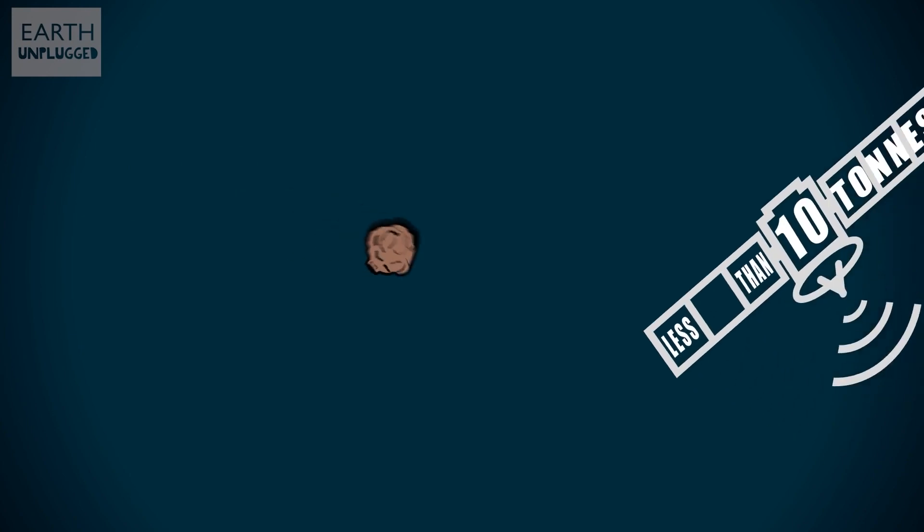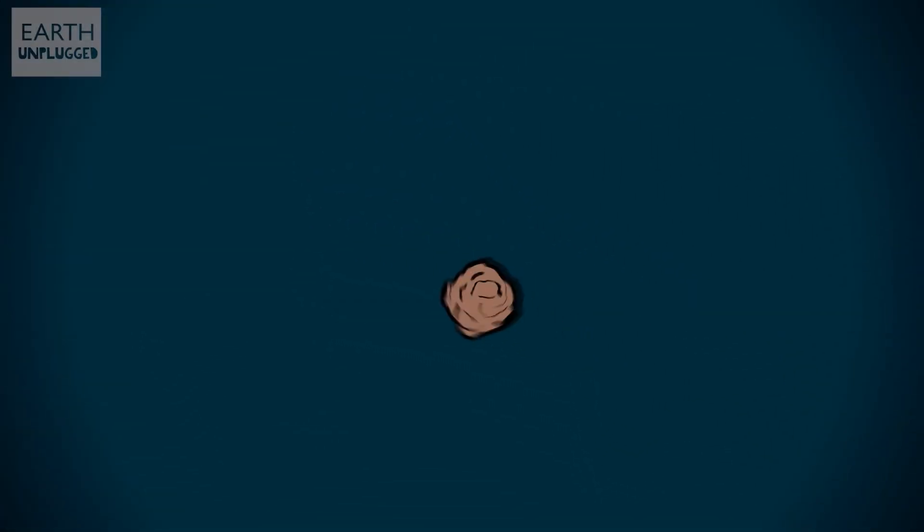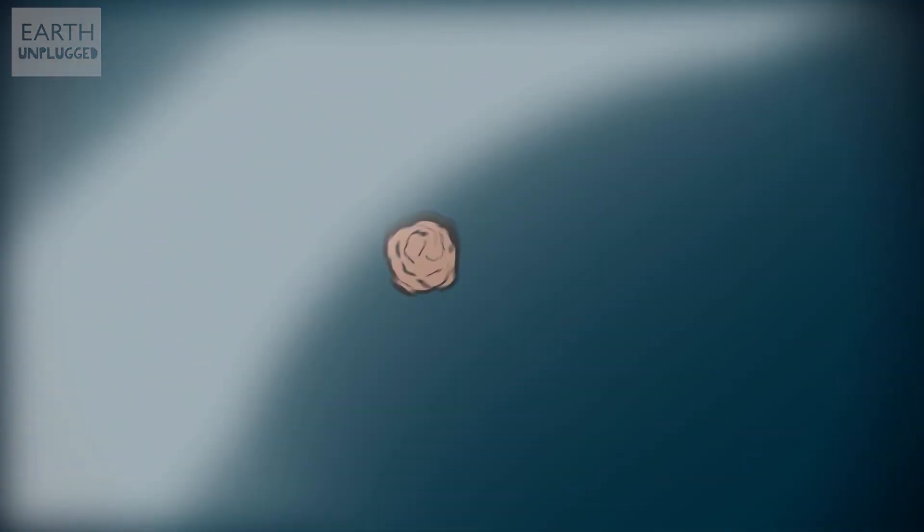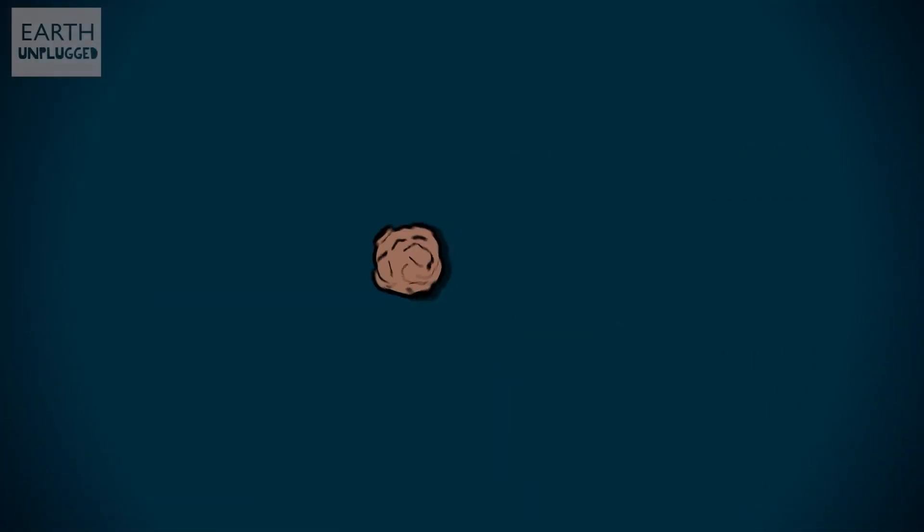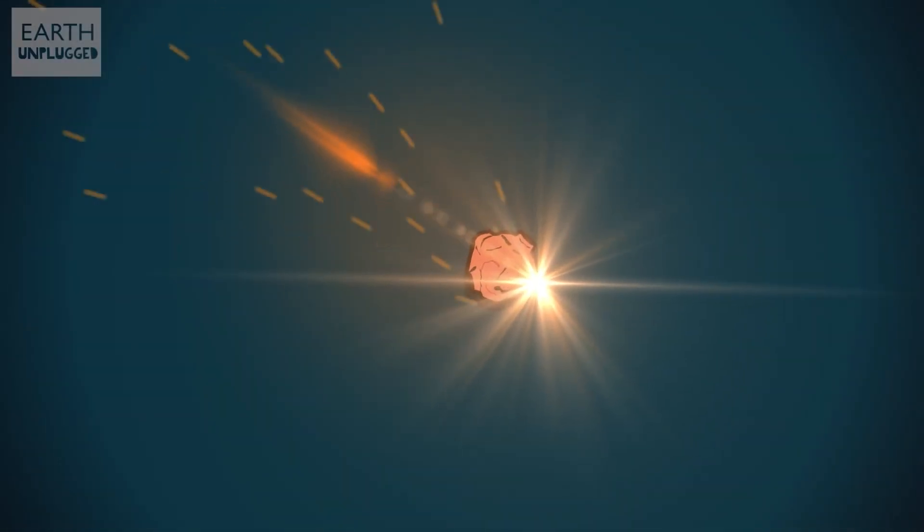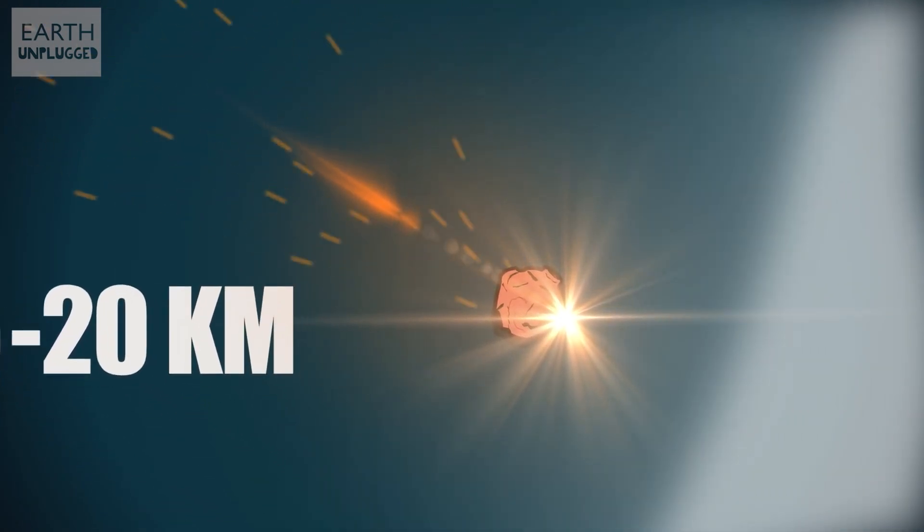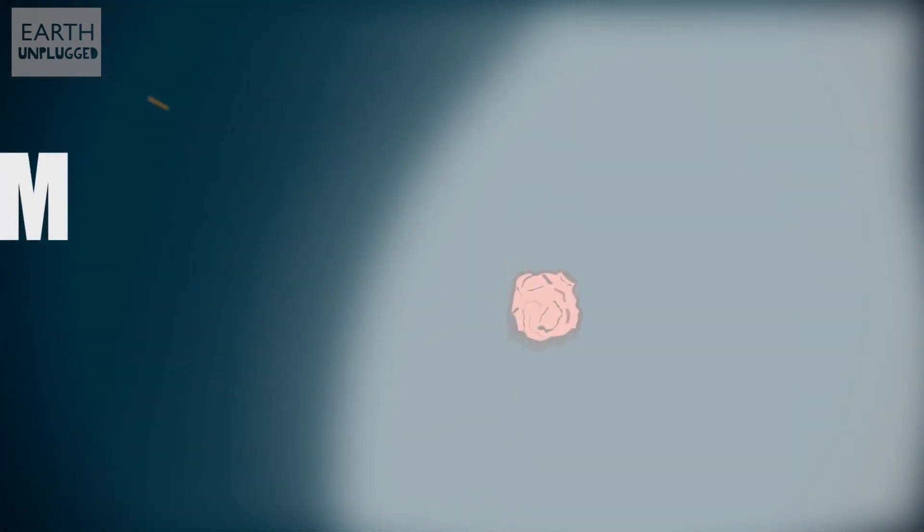However, small meteoroids, less than 10 tons, are greatly affected by our atmosphere and are slowed down due to drag. As it falls, the extraterrestrial rock heats up, catches fire, and begins to shed its outer surface. But between 15 to 20 kilometers high, the meteor usually decelerates so much that the flames actually go out.